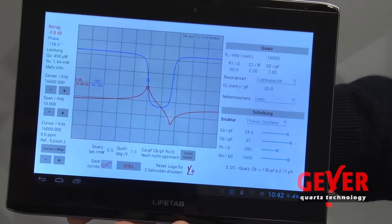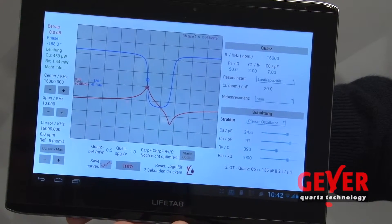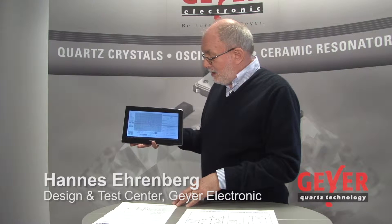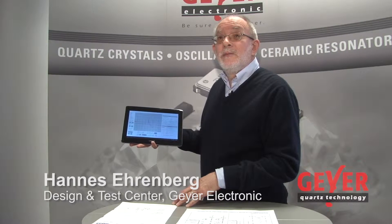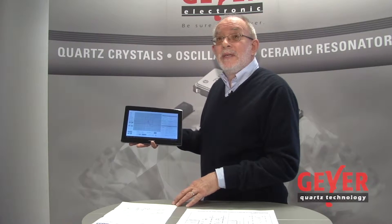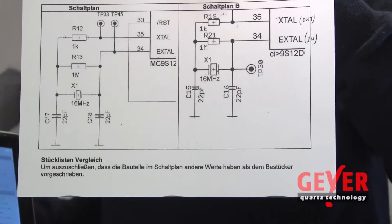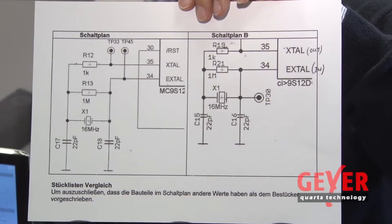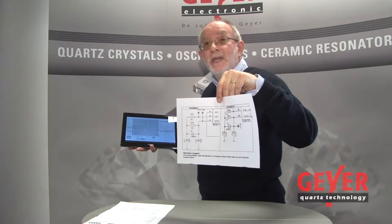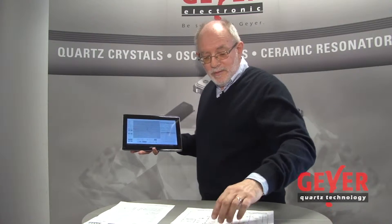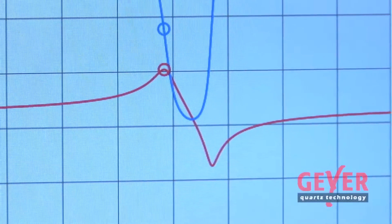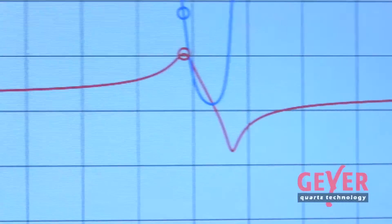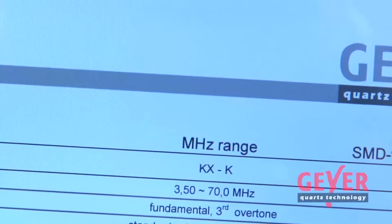You can use the Gaia Quartz app to select the appropriate quartz, as well as to simulate and optimize oscillator circuits. Here I have prepared a circuit diagram resembling a control card. To put it into practice, you need a 16 MHz quartz. This can be chosen directly from Gaia's product portfolio.